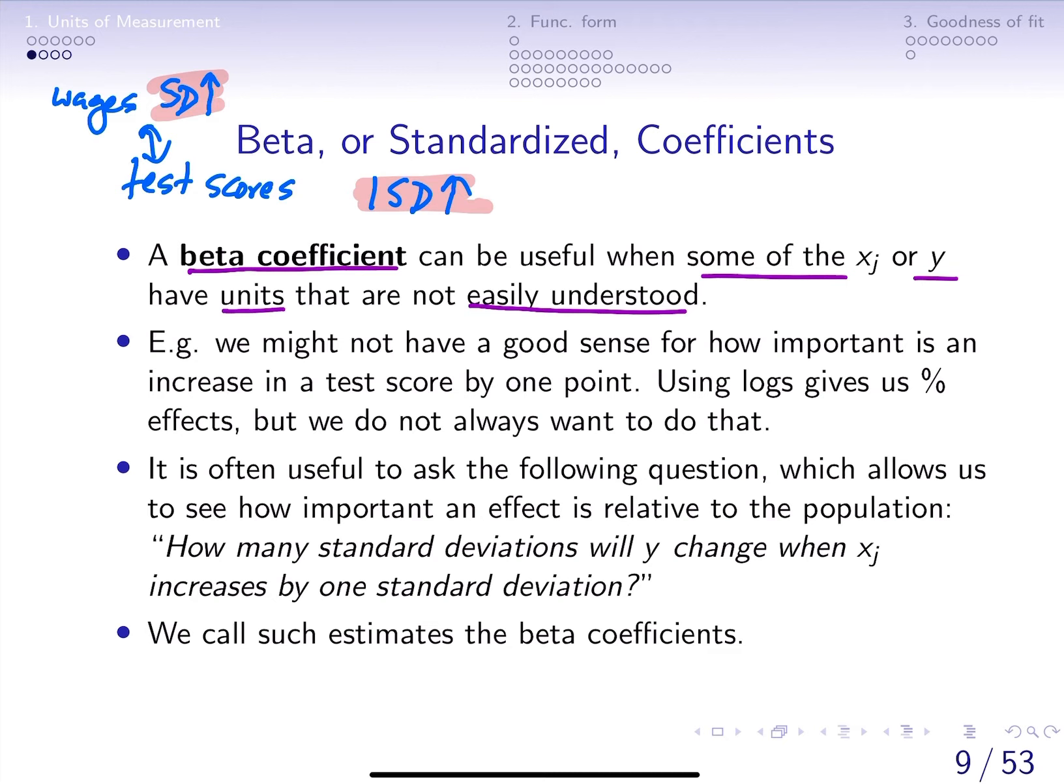The question that we're asking here is really related to how important one variable, let's say test scores, is relative to another variable, let's say IQ for wages. We're trying to assess the importance of an effect relative to what is going on in the population. The question that beta coefficients allow us to ask is: how many standard deviations will y change when xj increases by one standard deviation?